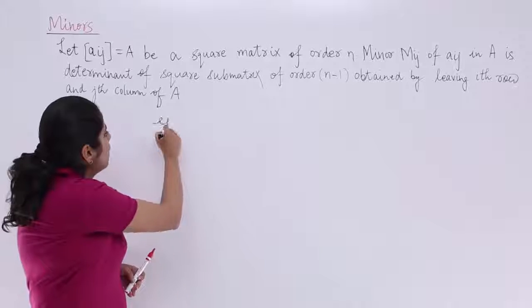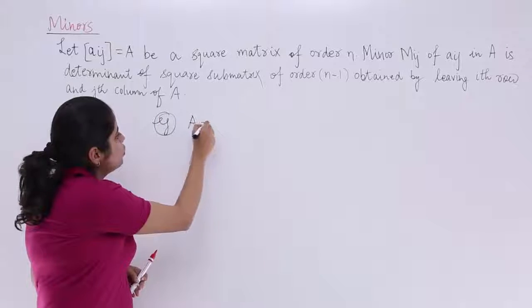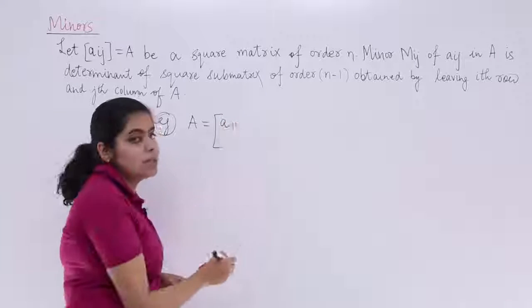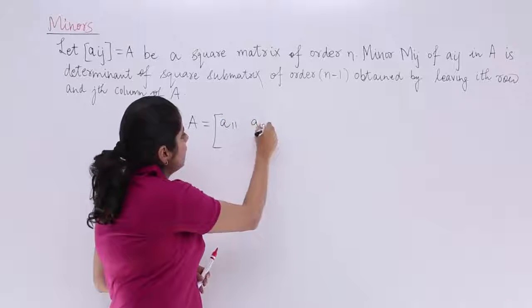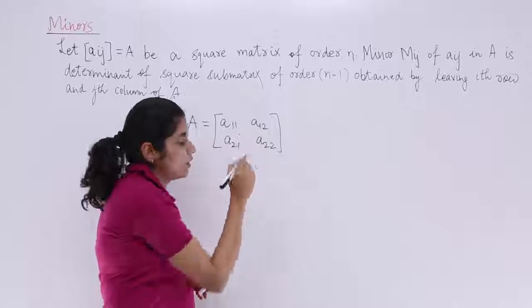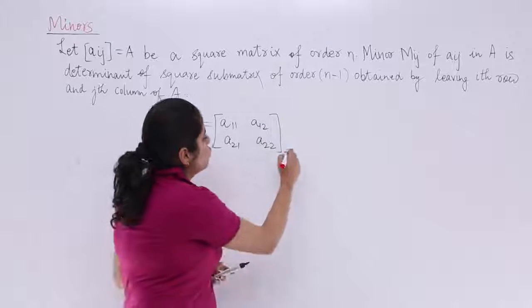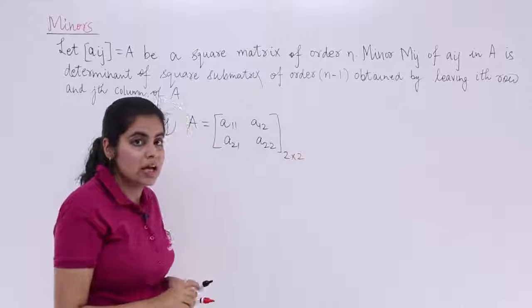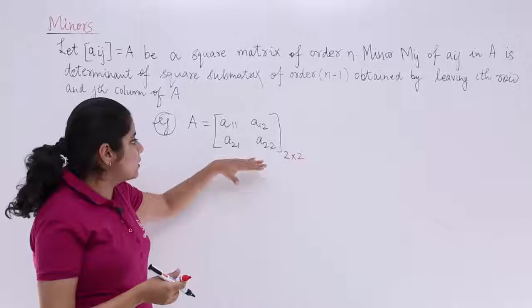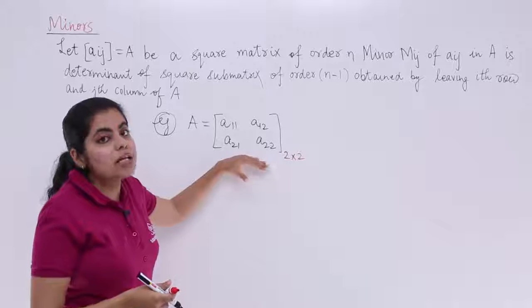Suppose you have a matrix given to you as A and it is a 2 by 2 matrix. The elements are A11, A12, A21, A22. Right? Now this is a 2 by 2 matrix. You know this. If you have to compute minor of this matrix, what is the criteria?